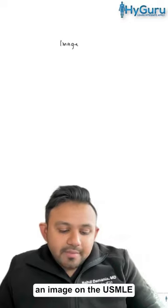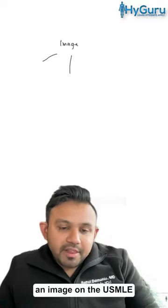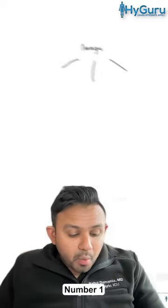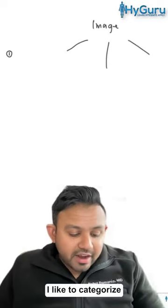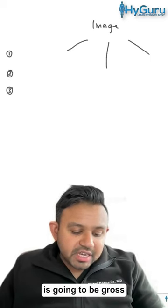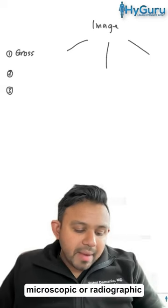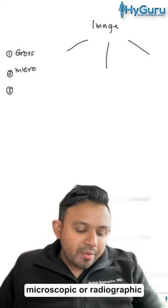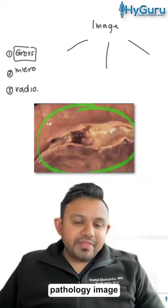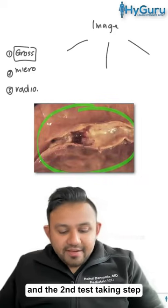Anytime I see an image on the USMLE, I like to go through three steps. Number one, I like to categorize whether or not the image is going to be gross, microscopic, or radiographic. This is a gross pathology image.